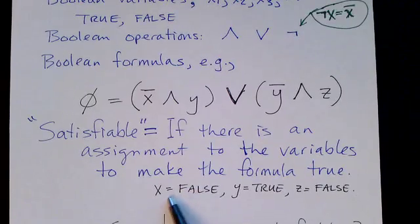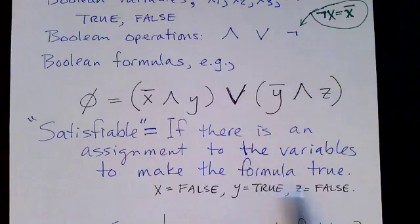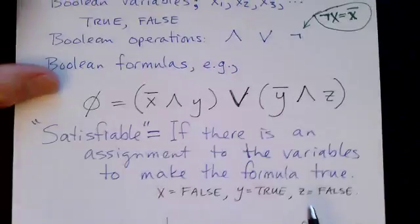A Boolean formula is satisfiable if there is an assignment to the variables to make the formula true. Here's one. X is false, Y is true, and Z is, well, I guess false would work just as well.